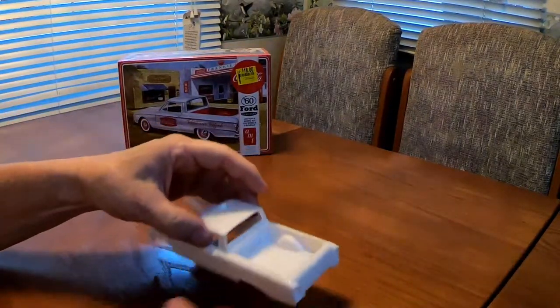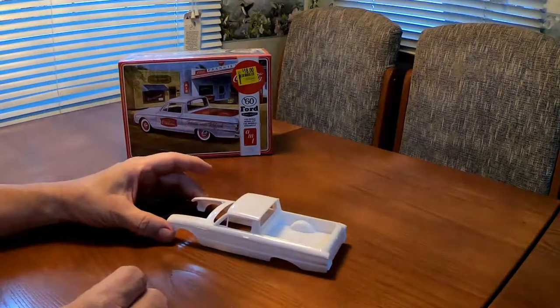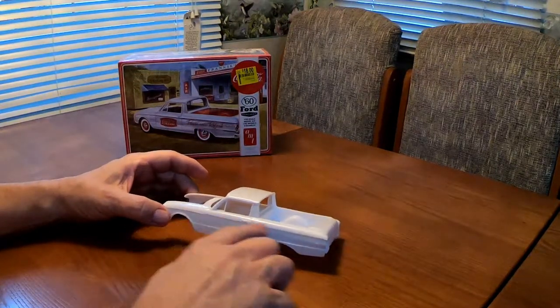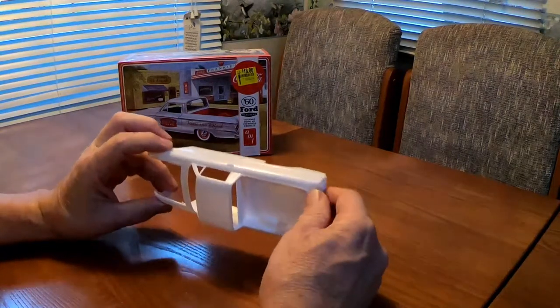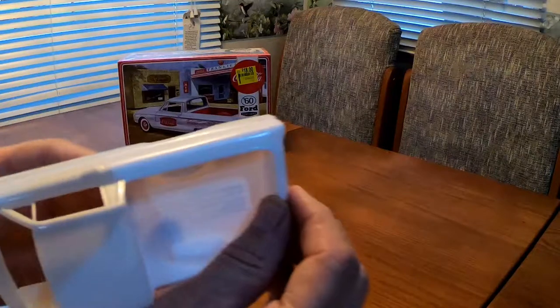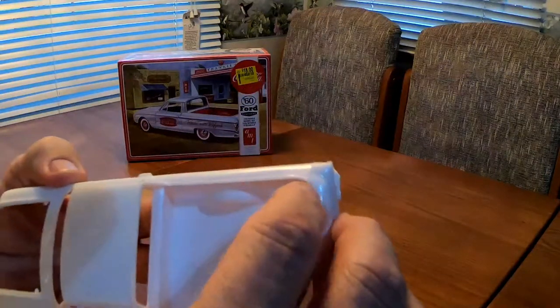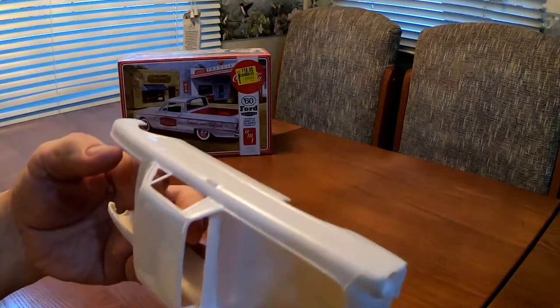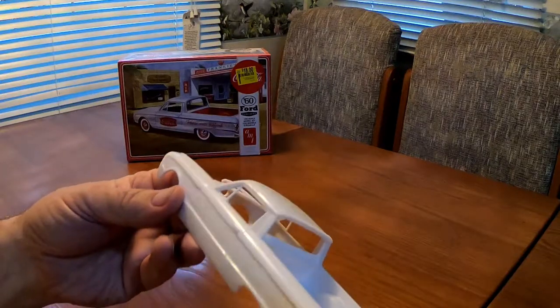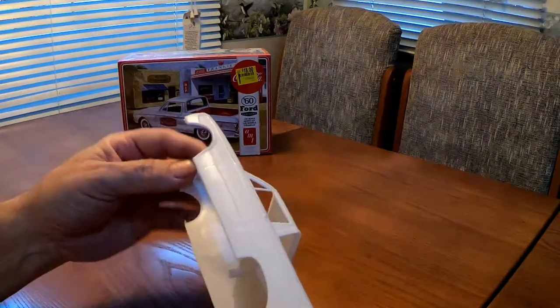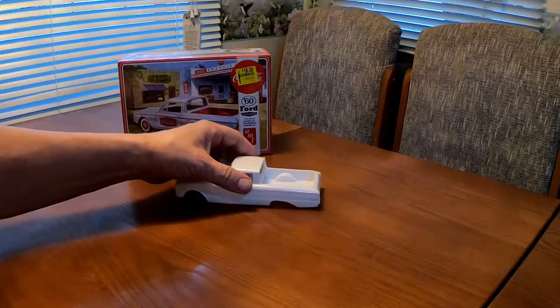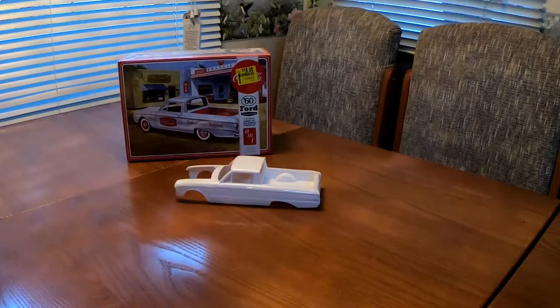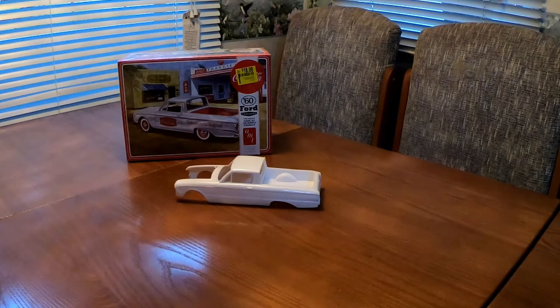Let's get started with the body. Now the body has got some mold seams in it that's going to have to be taken care of. They're pretty prominent. I don't know if you can see those or not. A little bit of flash to clean up but overall it's pretty clean and molded in white which makes it a lot easier depending on what color you want to paint it.